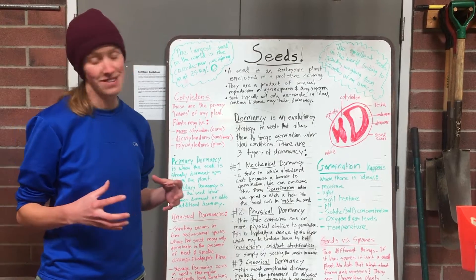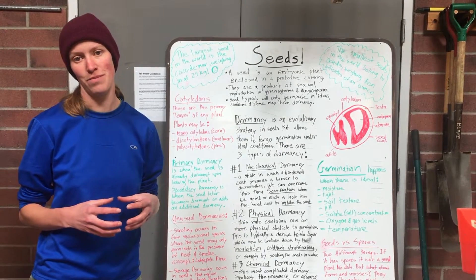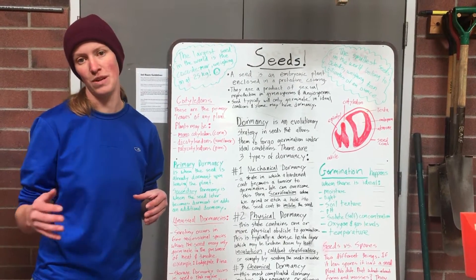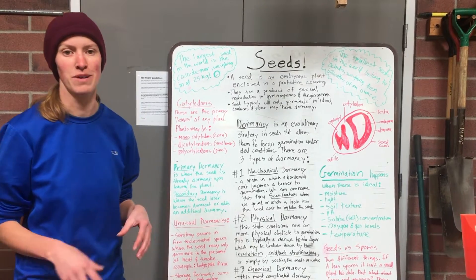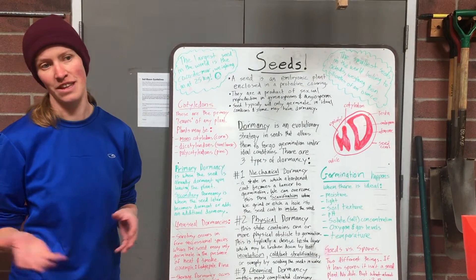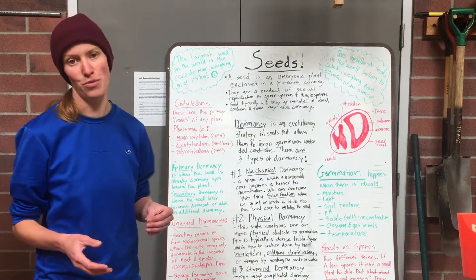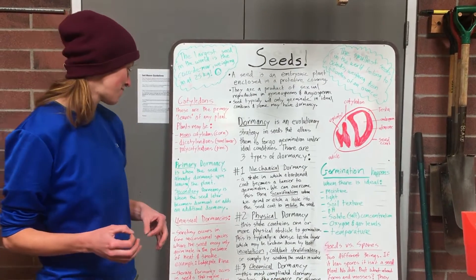This is an adaptation that developed due to seeds overwintering in harsh winter climates, so that they didn't germinate in December when they were going to freeze and die.